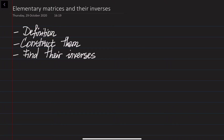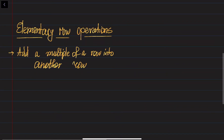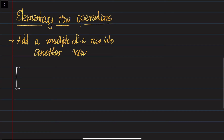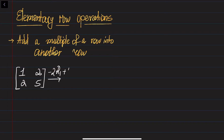If you remember, previously we talked about the three elementary row operations which we need to perform in order to bring the matrices to the row echelon form or to the reduced row echelon form. One of the elementary row operations was that we can multiply one of the rows by a constant and add this into the other one. So let's assume that you've got a matrix [1, 2; 2, 5]. In order to bring this matrix into the row echelon form, you would need to multiply the first row by minus 2 and add this to the second one. If you do this, what you get is [1, 2; 0, 1], which brings the matrix into the row echelon form.